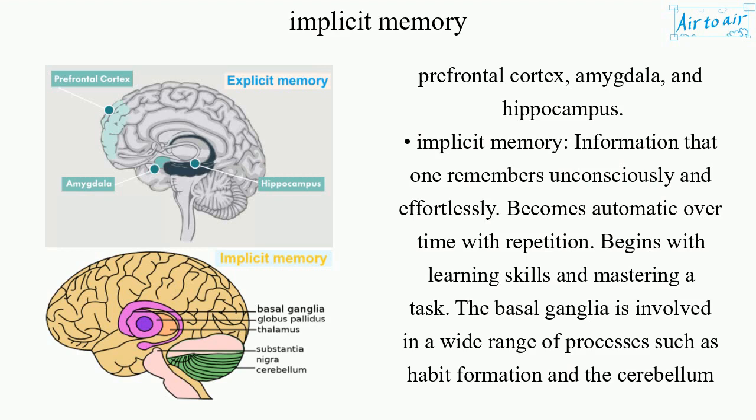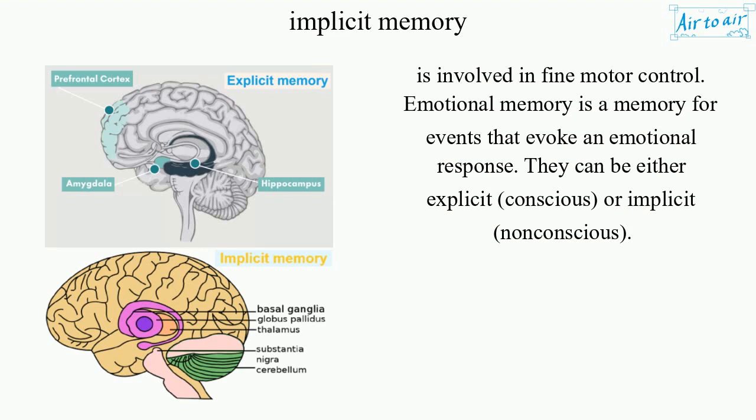Implicit memory is information that one remembers unconsciously and effortlessly, and becomes automatic over time with repetition. It begins with learning skills and mastering a task. The basal ganglia is involved in a wide range of processes such as habit formation, and the cerebellum is involved in fine motor control. Emotional memory is a memory for events that evoke an emotional response. They can be either explicit (conscious) or implicit (non-conscious).